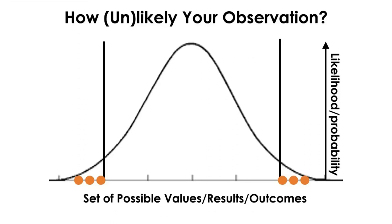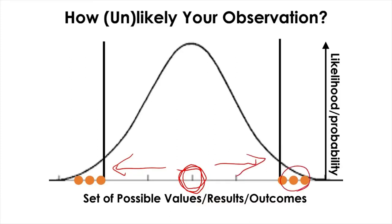Think about exam scores: if the usual score is 50, that is the center. If you go far away from the mean — say scores of 90 or 100, or scores of 10 or 20 — you do not find those scores as often compared to scores close to the mean. So the middle scores are more likely to happen, whereas the extreme scores in the tails are not likely to be seen frequently.